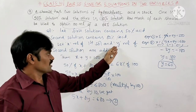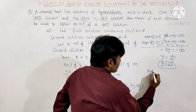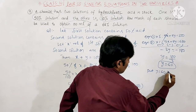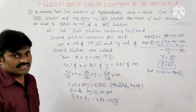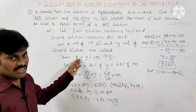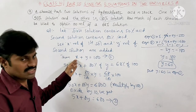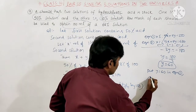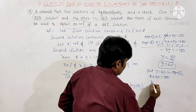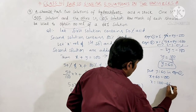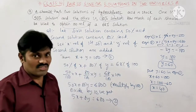The second solution quantity is Y ml, so Y equals 60. Now substituting Y equals 60 into equation 1 to get X: X plus 60 equals 100, so X equals 100 minus 60, which gives X equals 40.